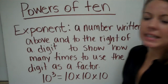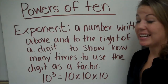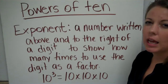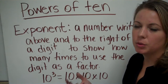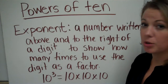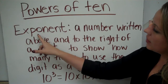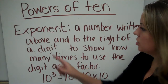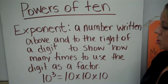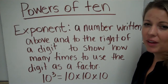Powers of ten is traditionally used in a scientific environment where someone is trying to communicate a number that's unfathomable or not able to be understood by the mind unless it's summarized or broken down. So, exponents are used. An exponent is a number written above and to the right of a digit to show how many times to use that digit as a factor.